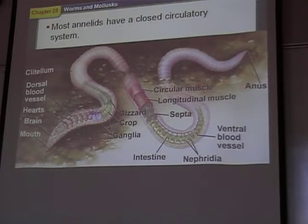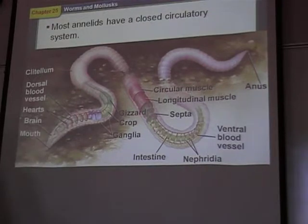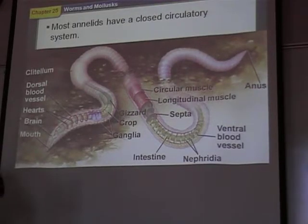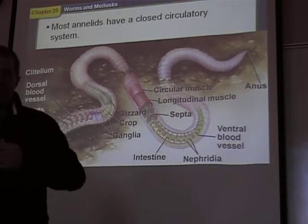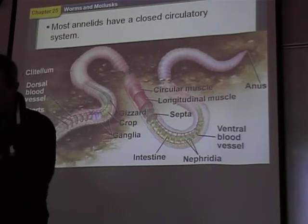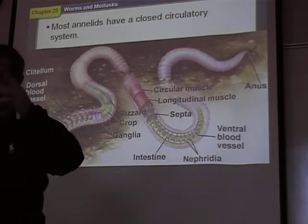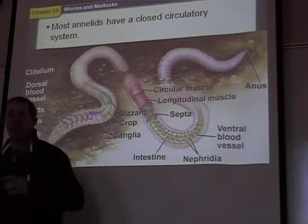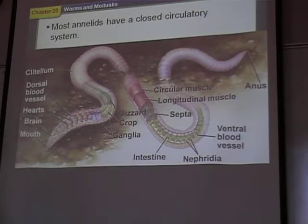If the blood stays in vessels the whole time — like it does in the earthworm — that's a closed circulatory system. Most annelids have closed circulatory systems. Most mollusks that we learned about yesterday have an open circulatory system, meaning the blood doesn't stay in vessels — it floats freely throughout their body, not contained in vessels. In an open circulatory system, the heart just acts like a pump and pushes blood into an open space, and it circulates and eventually makes it back to the pump. In us, the blood stays in tubes — a closed circulation — and the tubes get very small and go to every cell.